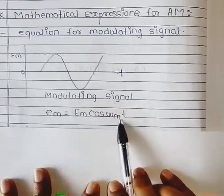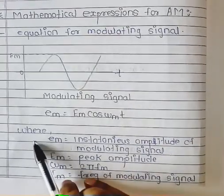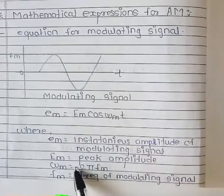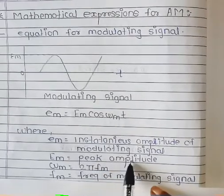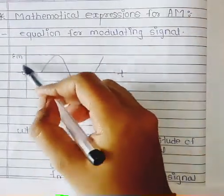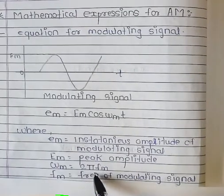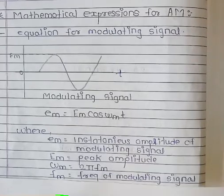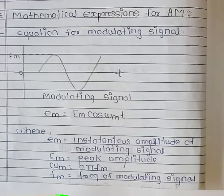In this equation, small e_m is the instantaneous amplitude of the modulating signal. Capital E_m is the peak amplitude. ω_m equals 2π f_m, where small f_m is the frequency of the modulating signal.